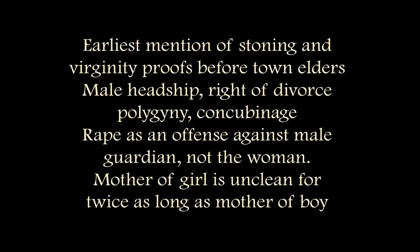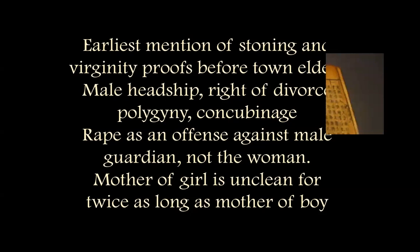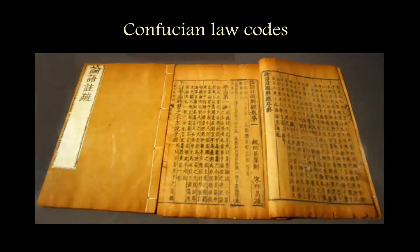Then you have the theme of female uncleanness, which lasts longer if you bear a girl than if you have a boy. In China, the Confucians come along in pretty much the same time frame as a lot of the world religions — Buddhism, Chinese Confucianism — a lot of things were happening, as were Western patriarchal law codes, around the 5th and 6th century BCE.